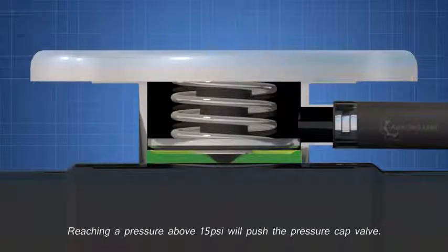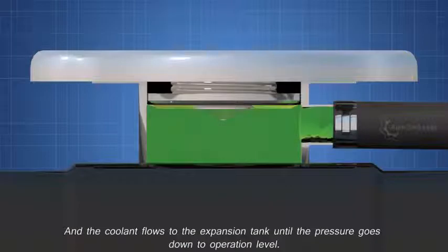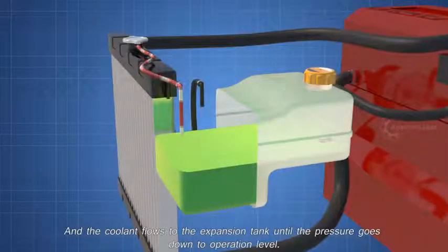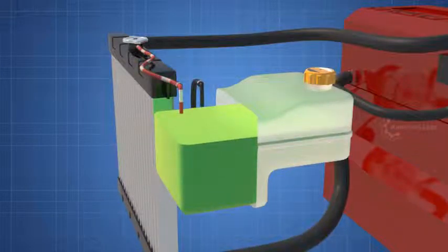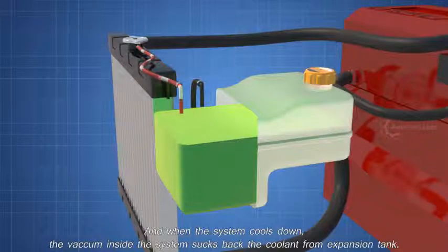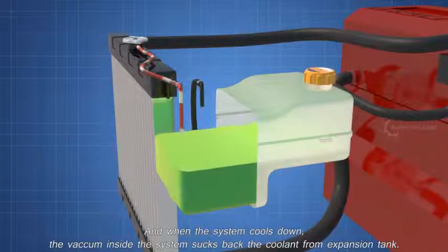Reaching a pressure above 15 PSI will push the pressure cap valve and the coolant flows to the expansion tank until the pressure goes down to operation level. And when the system cools down, the vacuum inside the system sucks back the coolant from expansion tank.